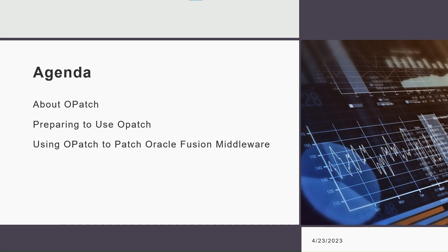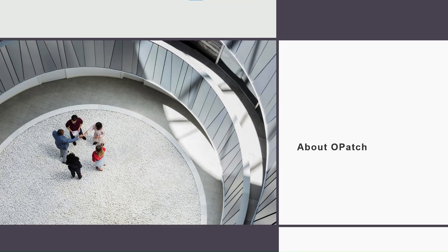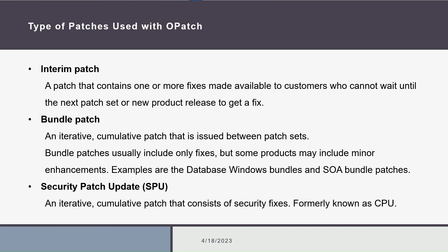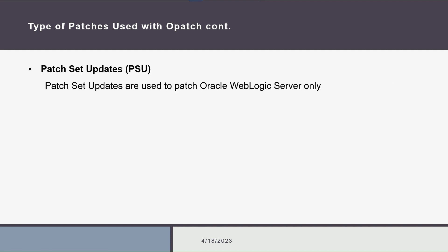We'll talk about the OPatch utility, then preparing how to use it, and at the end we will learn how to apply patches using the OPatch utility. OPatch is a Java-based utility that's used to apply patches to Oracle software, and there are four types of patches: interim patch, bundle patch, security patch update, and patch set updates.